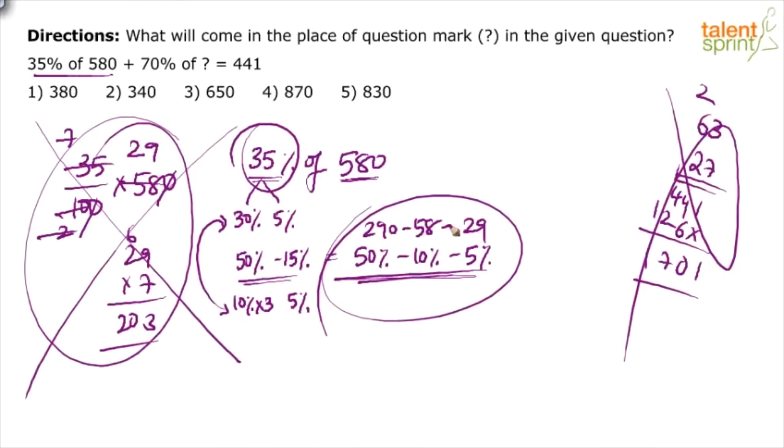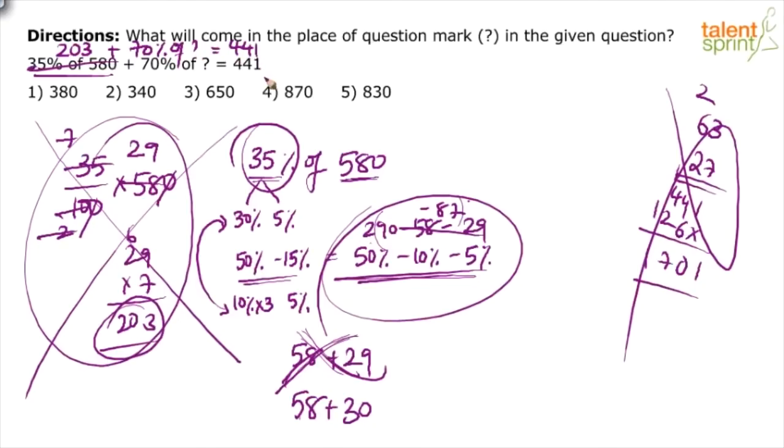I am sure if 63 has to be multiplied with 27, at least 90% of us will do it on paper. Waste of time. Absolute waste of time. Simply a waste of time. You have to do it in a smarter way. 27 can be taken as 30 minus 3. So I would say 1890 minus 189 which gives you 1701. Paperwork is the biggest challenge. You have to cut down the paperwork.